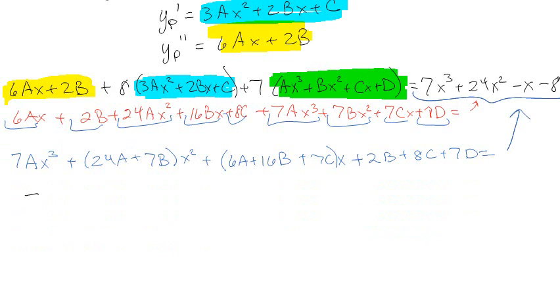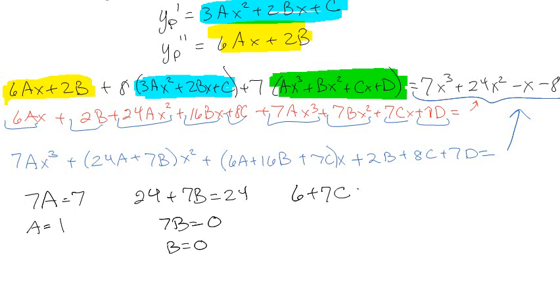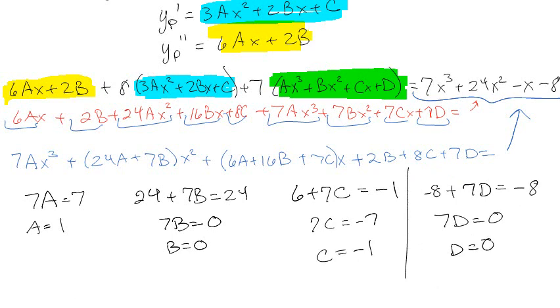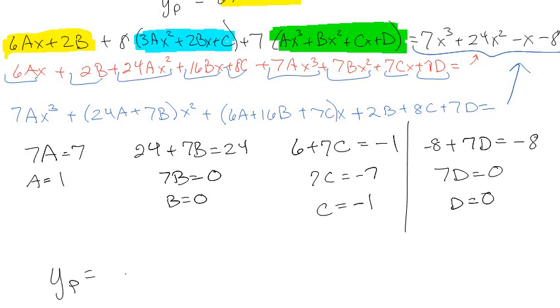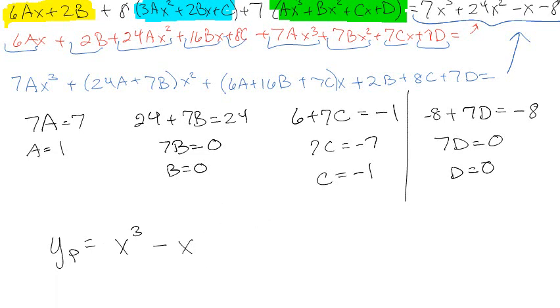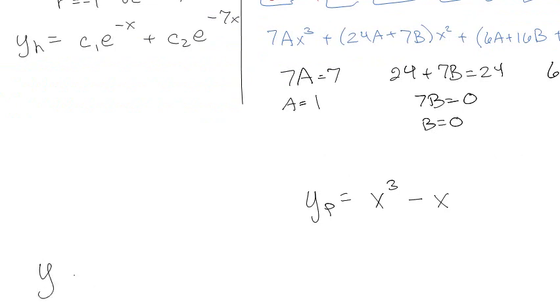So this is all just to find part of the problem. 7a equals 7, so a equals 1. 24a, which is 1, plus 7b equals 24, so b equals 0. 6 times 1 plus 16 times 0 plus 7c equals negative 1. Subtract 6 from both sides. The last one is 2 times 0 plus 8 times c, which is negative 1, plus 7 times d equals negative 8. That means 7d is 0, d is 0. Now I can finally write my particular solution, which is ax³ + cx, so x³ - x. There's my particular solution. And I can combine that with my homogeneous to get a full solution of x³ - x + c1 e^(-x) + c2 e^(-7x). And all would be perfectly fine, except that I have these goofy initial conditions that are not centered at 0.